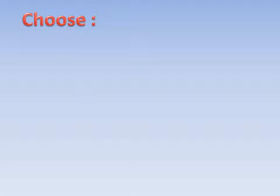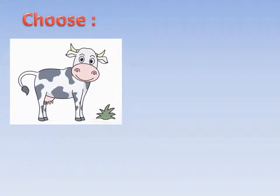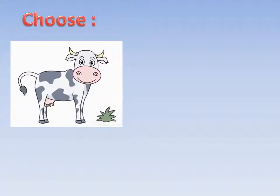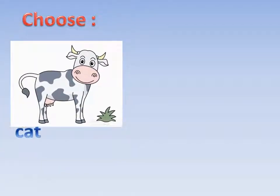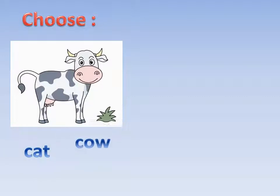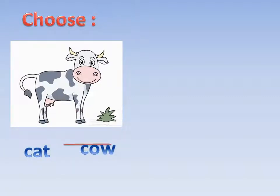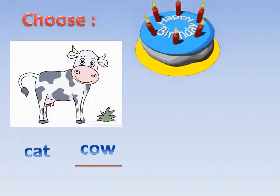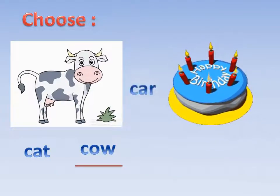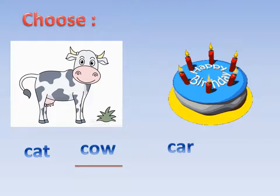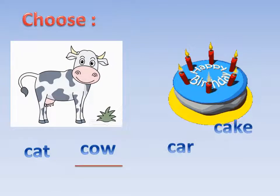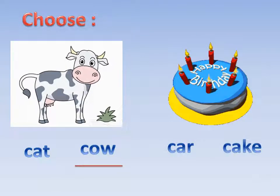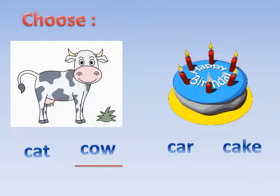Exercise one: choose the correct picture. Picture one — what is this? Cat or cow? Yes, cow! Excellent! Picture two — what is this? Car or cake? Yes, cake! Excellent!